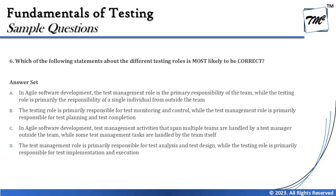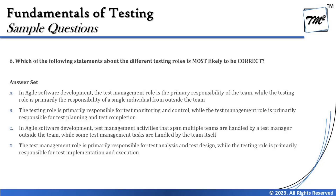Option B says the testing role is primarily responsible for test monitoring and control, while the test management role is primarily responsible for test planning and test completion. The conflict here is that the management role covers planning, completion, monitoring, and control — all of those. But the testing role, as per the syllabus definitions, is responsible for analysis, design, implementation, and execution. So Option B is also incorrect.